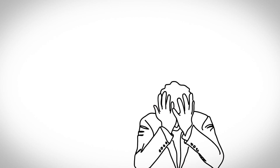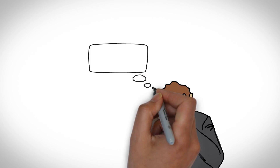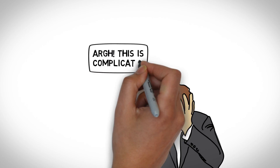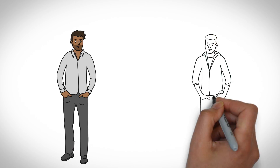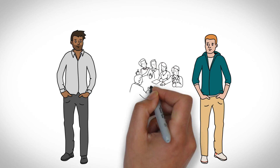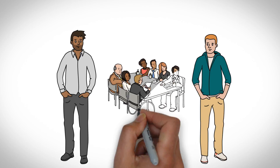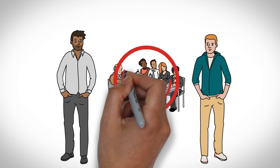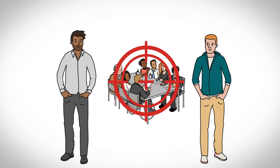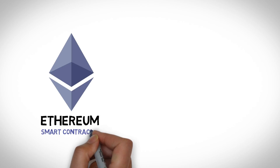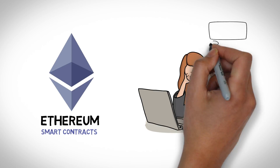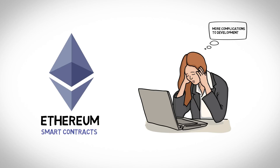Smart contracts can be difficult to understand because they reflect the complicated nature of contract law. In the past, service-oriented contracts had to run through a centralized service, like a middleman or a company. This poses a threat to the security and freedom of the clients because it creates a single target for potential attacks. Ethereum solves that problem with smart contracts, but brings more complication to the development side of things as a consequence.